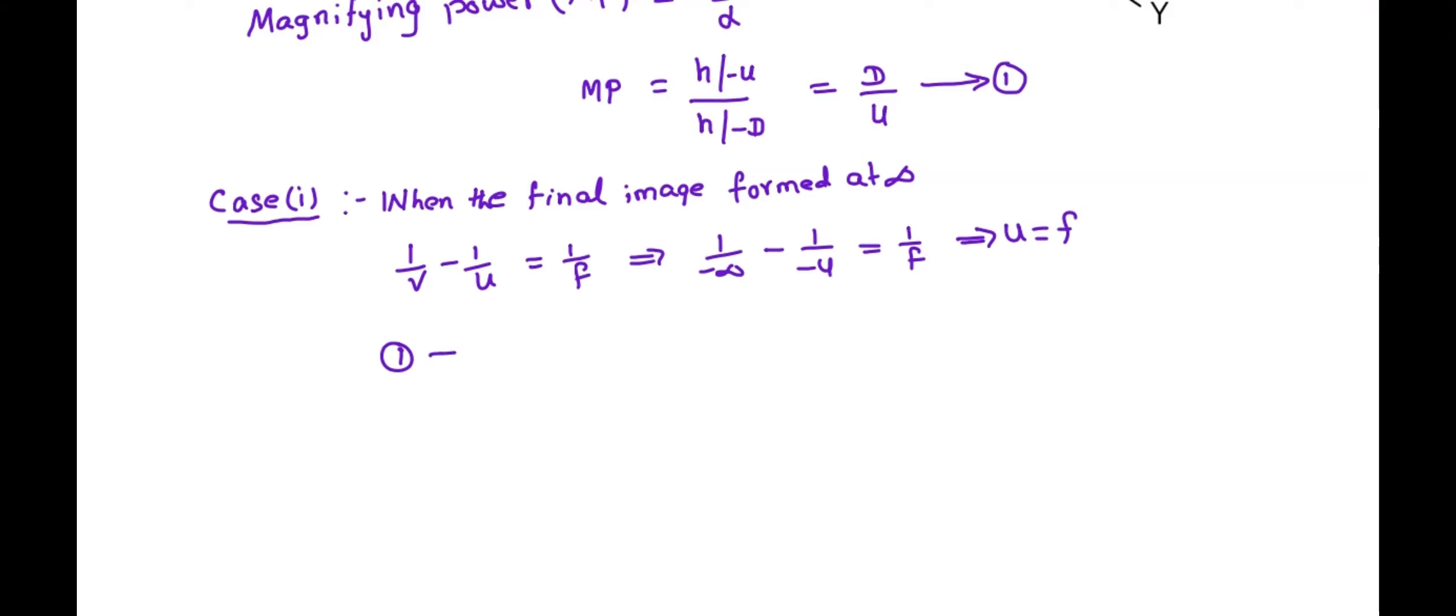So from equation number 1, we can write magnifying power or angular magnification is equal to d by u, that is equal to d by f. Name it equation number 2.